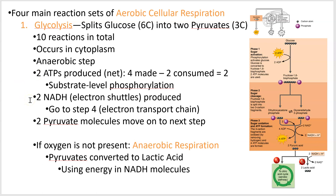That ATP is made through substrate level phosphorylation. We also get two molecules of NADH — nicotinamide adenine dinucleotide. You don't have to know the full name, just know NADH. Think of it like an electron shuttle bus: it comes to glycolysis, grabs some electrons, and we'll see it again later in step four. Whenever you see these NAD-type molecules, think of them being passed to the last step. We also get two pyruvate molecules as end products.